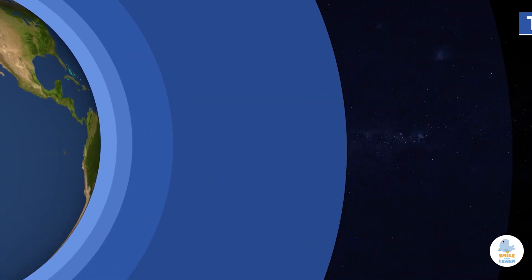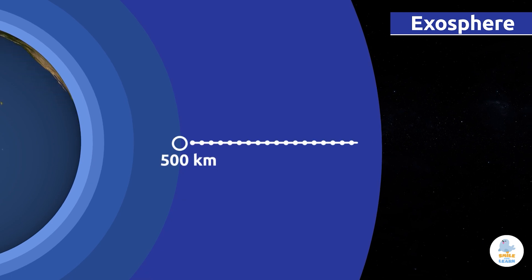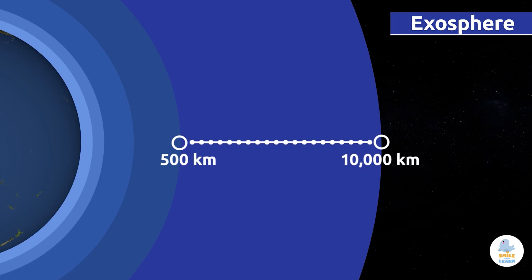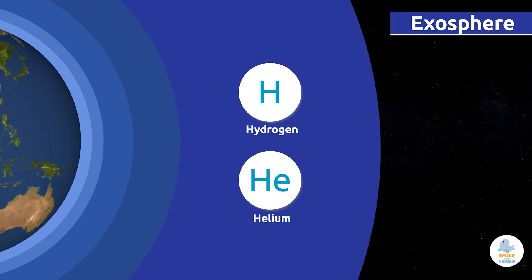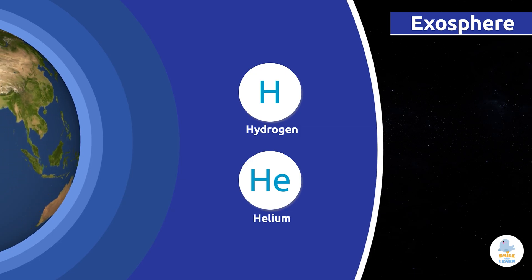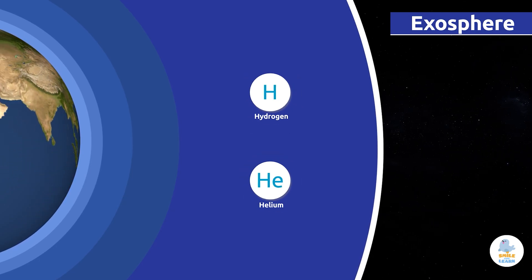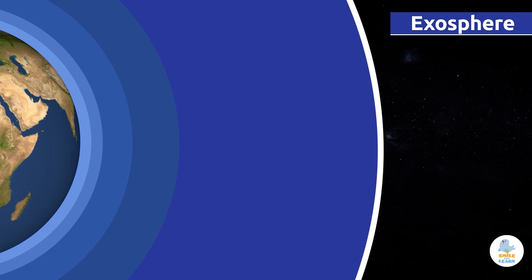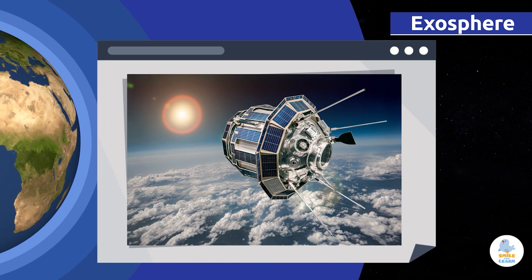The exosphere is the most distant layer from the Earth's surface. It extends to an altitude of approximately 500 to 10,000 kilometers above sea level. Air in the exosphere is very thin — there's nothing but hydrogen and helium there. This layer is our outermost limit with space and protects us from solar flares. Satellites orbit the Earth within the exosphere.